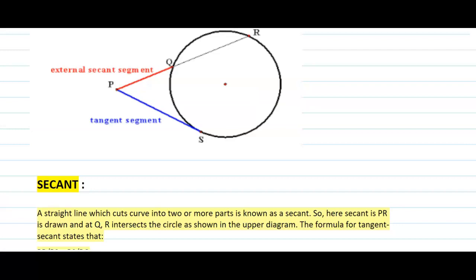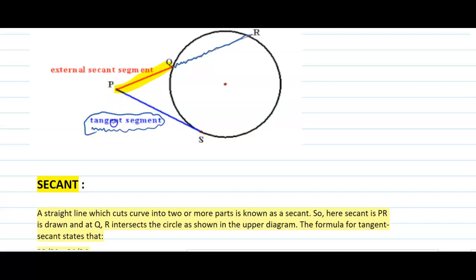A straight line which cuts a curve into two or more parts is known as a secant. If you see this diagram, this yellow part is called the secant. This is called the external secant segment. This line is passing through the circle at Q and R — it is going inside the circle. The tangent is touching the circle and it is at exterior point P. The blue line is called the tangent segment because it is touching here and not going inside the circle. So secant here is PR.